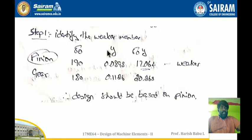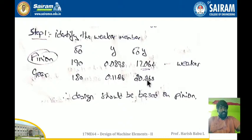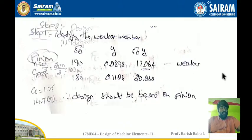To identify the weaker member, I calculate the product of allowable stress and form factor for each. For the pinion: 190 × 0.0898 = 17.064. For the gear: 180 × 0.1126 = 20.268. Since the pinion gives the lower product, the pinion is the weaker member, so the design should be based on the pinion.